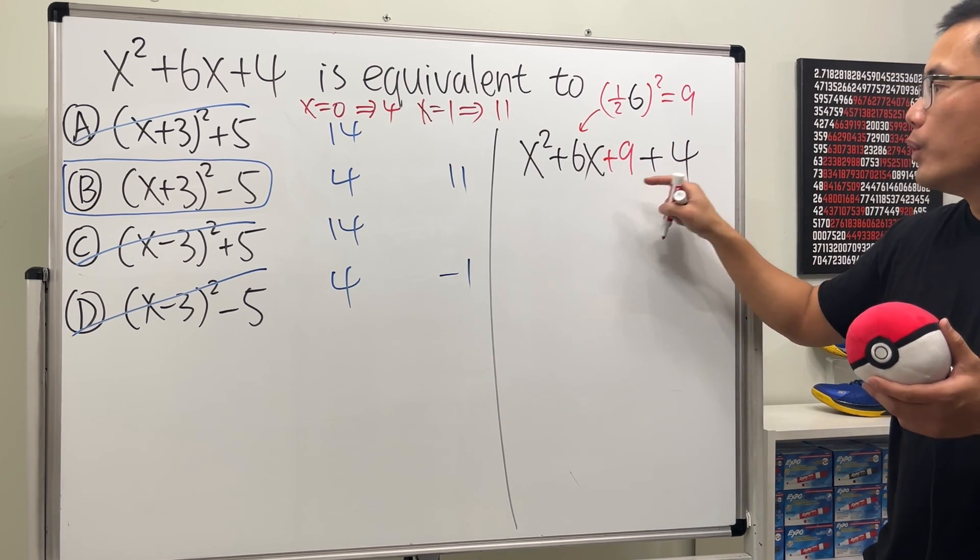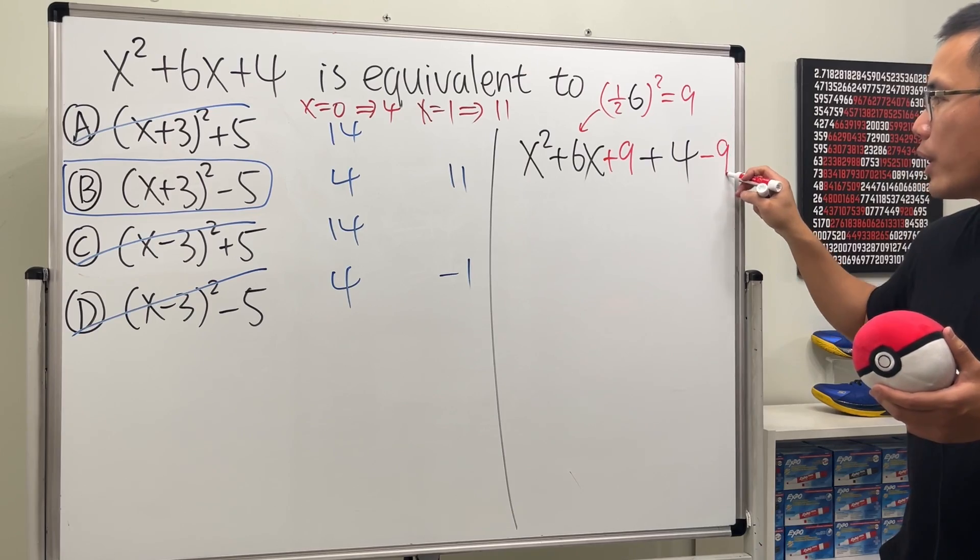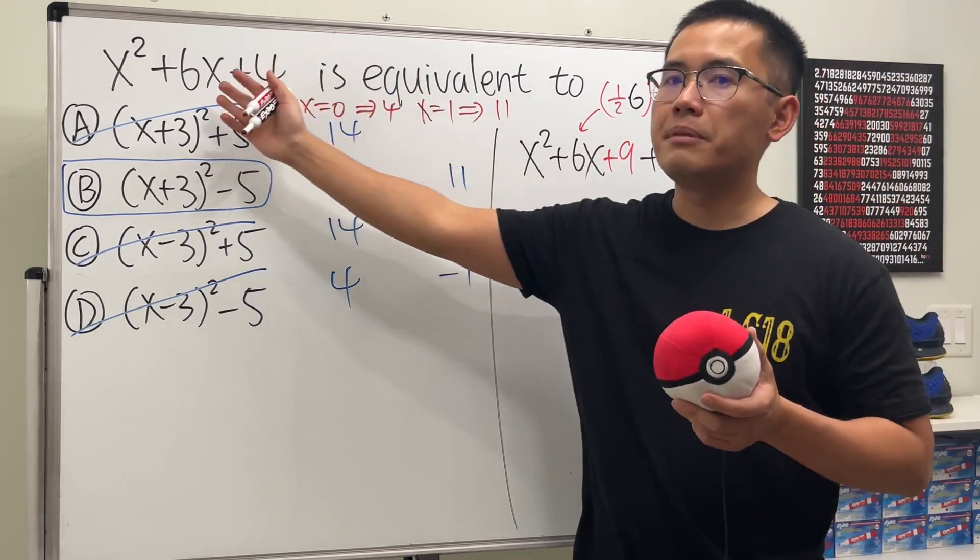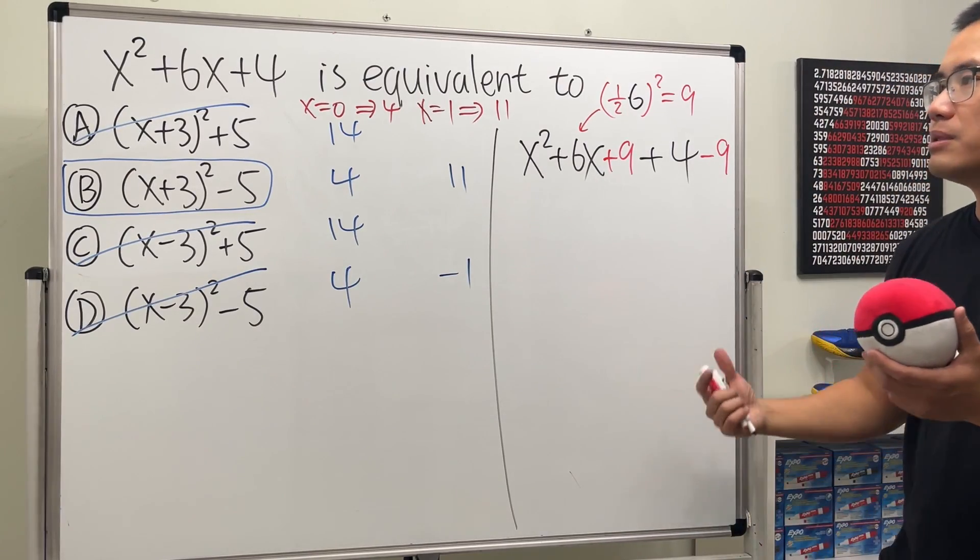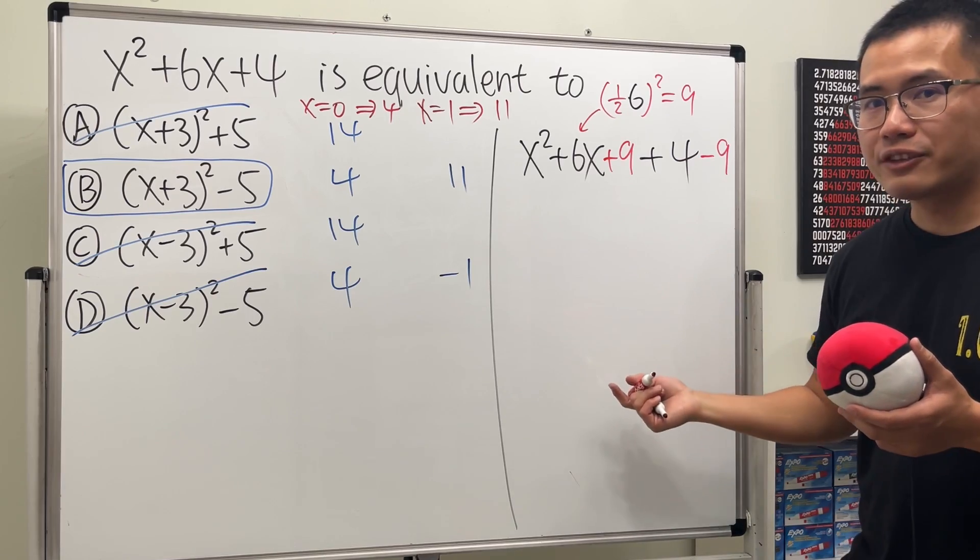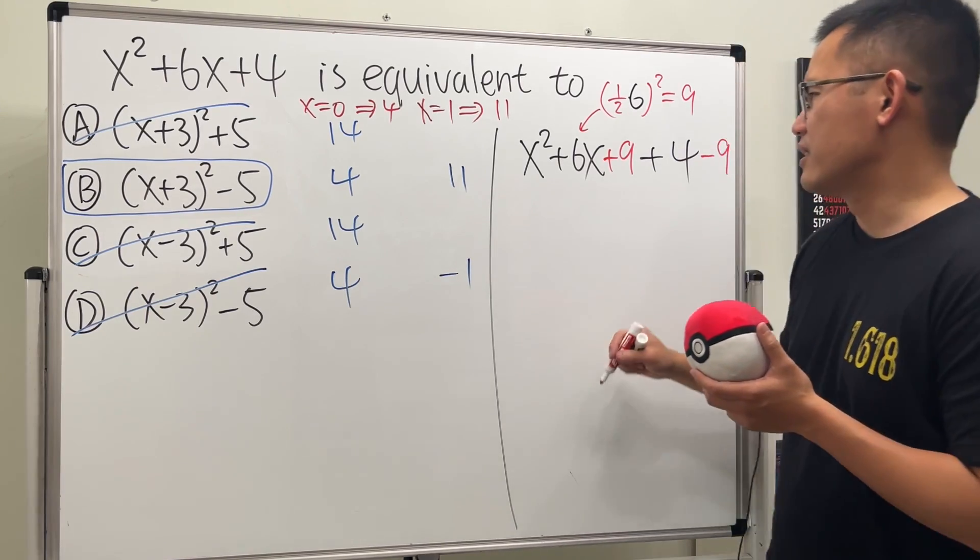But in the meantime, we will also have to minus 9 right here. So that is like adding 0. So we can maintain the same expression in terms of the value-wise. And now, for the first three terms, we can factor it.